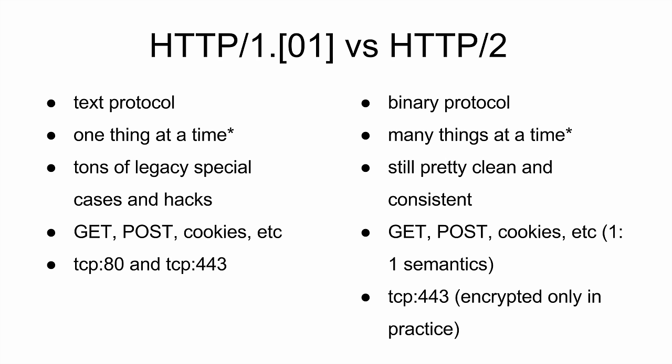In conclusion: HTTP 1 is a text protocol where you can do one thing at a time. HTTP2 is a binary protocol where you can do many things at a time. But other than that, the semantics are the same — GET, POST, cookies — everything works the same. You don't have to change your application.